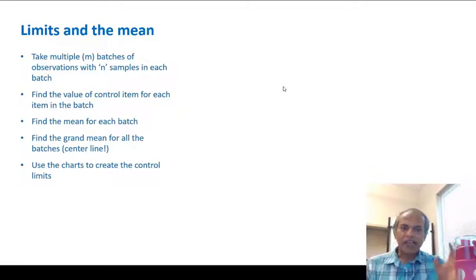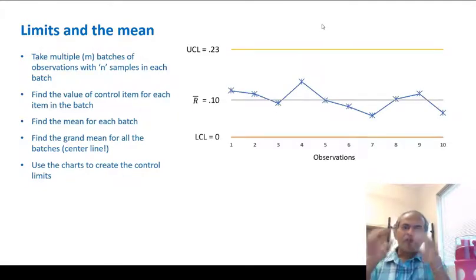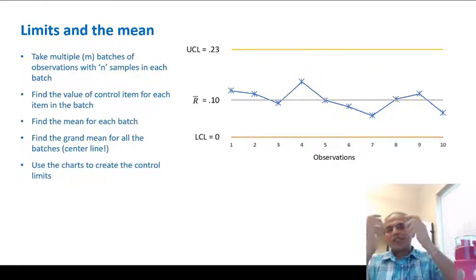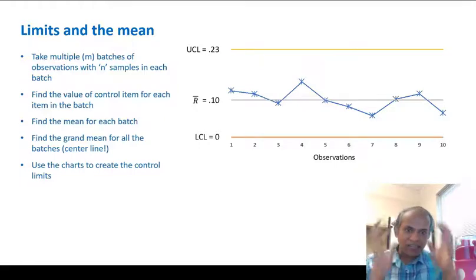So now, how do we create control charts? Simple. We take multiple batches. Control charts are formed for batches, they're not formed for individual values. So we take multiple batches, and each batch has n samples. For each of them, we measure. Let's suppose we are measuring the thickness of a particular object. We take batches of 15 objects, and we take 100 batches, and each batch has 15 objects, and we measure thickness of each. So thickness of first object in first batch, thickness of second object in first batch, thickness of 15th object in the first batch, and so on. We take all these values.